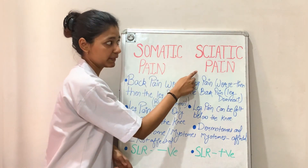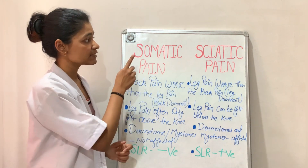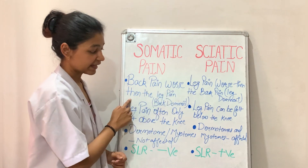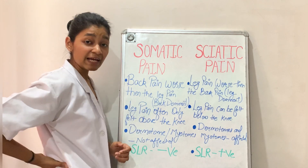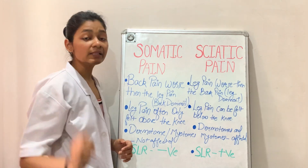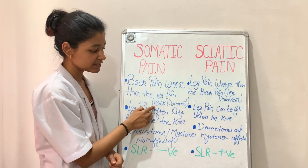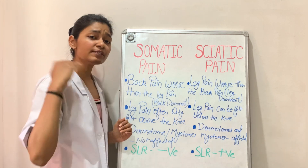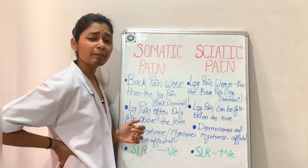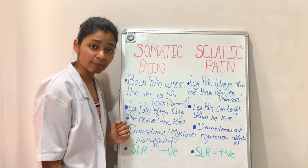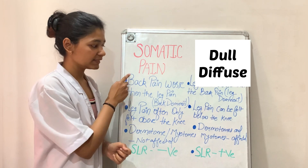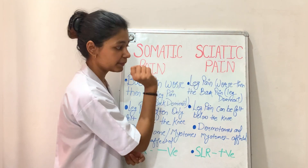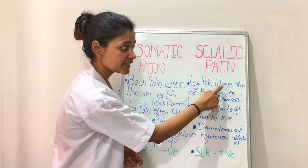These are the differentiating features between somatic and sciatic pain. If a patient has somatic pain, the first thing to note is that the back pain is worse than the leg pain — these patients are considered back-dominant. If you ask them which is more painful, they will reply that the back pain hurts the most. The leg pain in these individuals will be diffuse and dull.